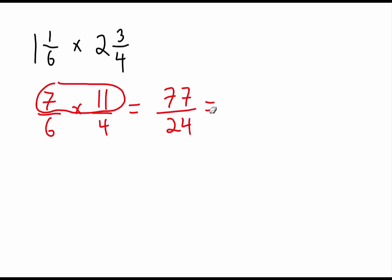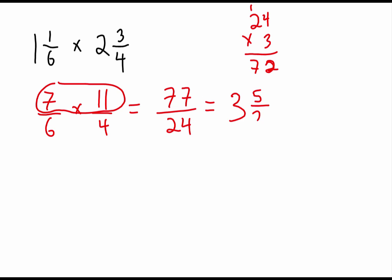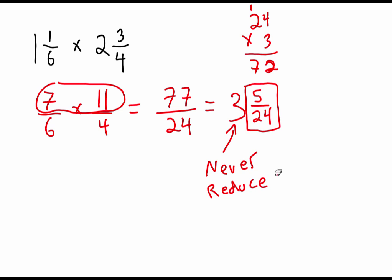Multiply the numerators to get 77, and six times four is 24 on the denominator. Now convert to a mixed fraction: 24 times three is 72, which is close to 77, so it goes in three whole times with a remainder of five. That gives us three and five twenty-fourths. Important note: never reduce the whole number — only reduce the fraction. Since five over 24 is already reduced, our final answer is three and five twenty-fourths. You can now confidently say you've mastered multiplication of fractions numerically.